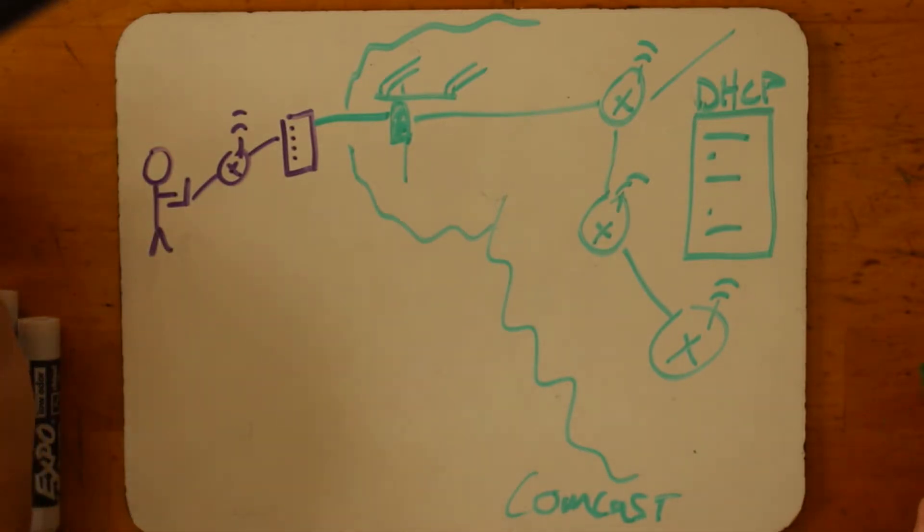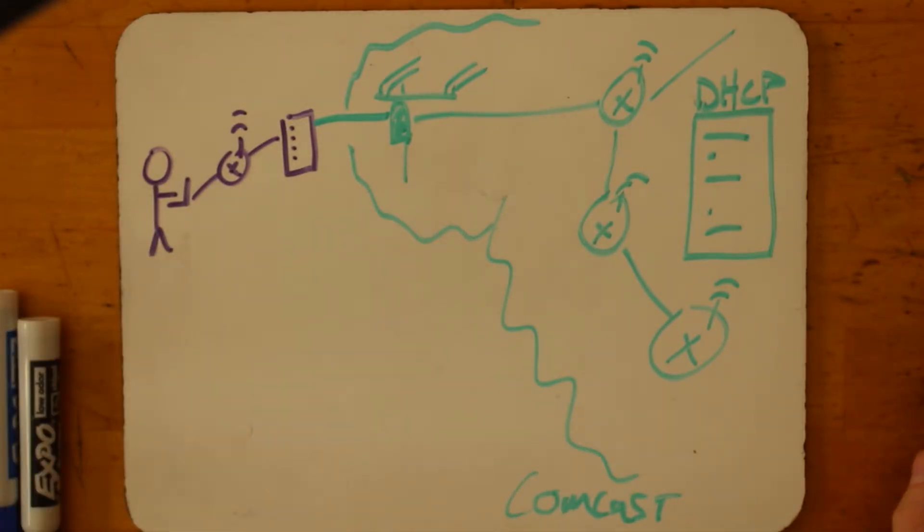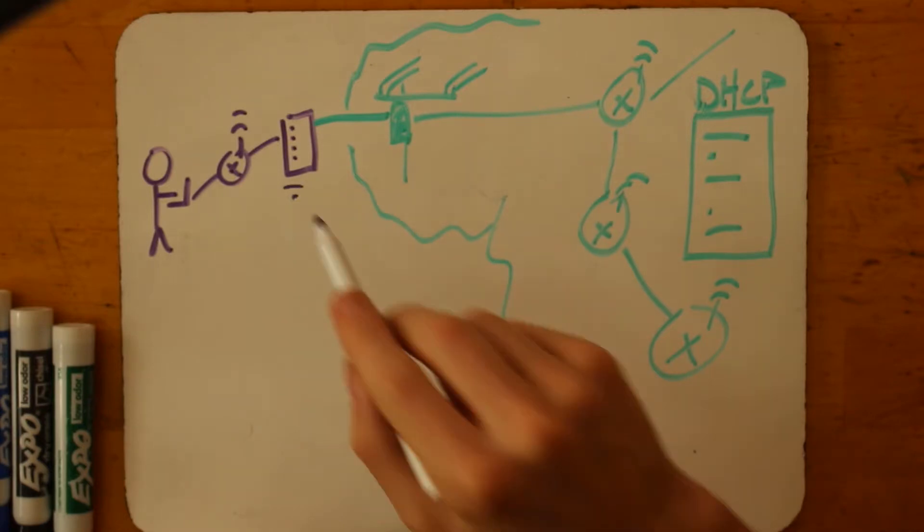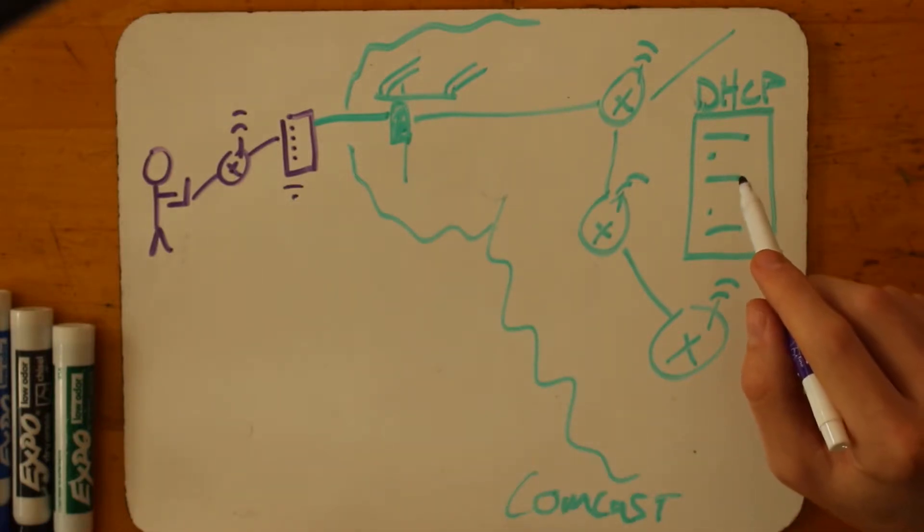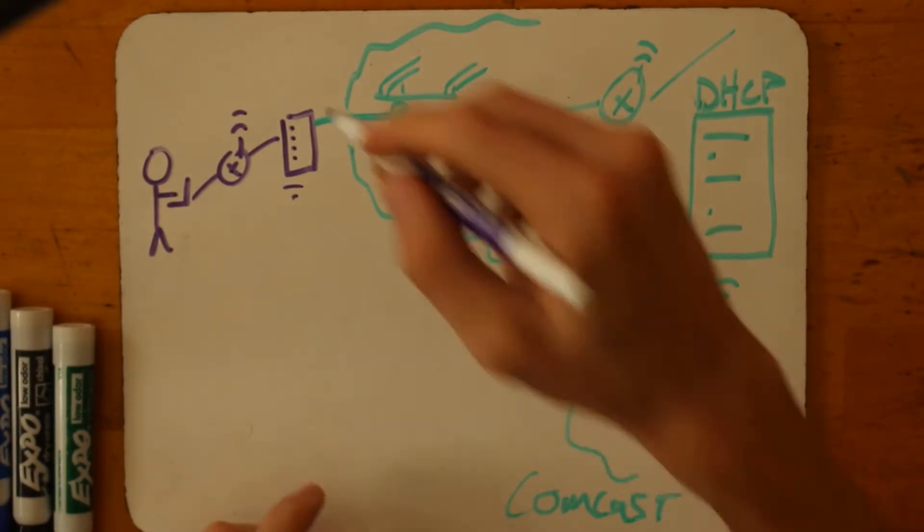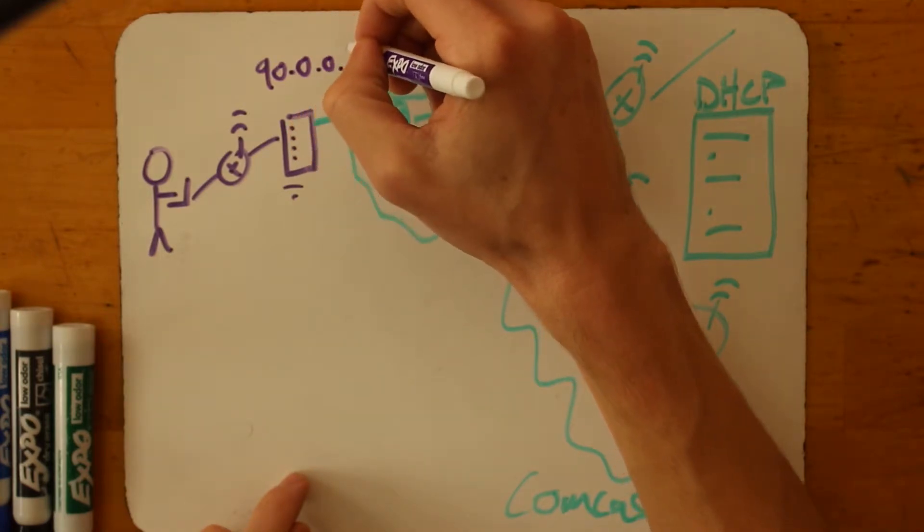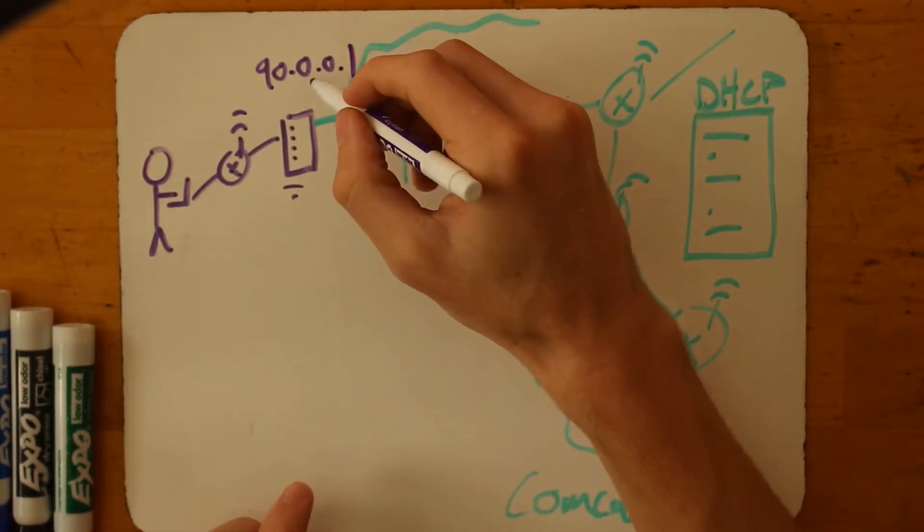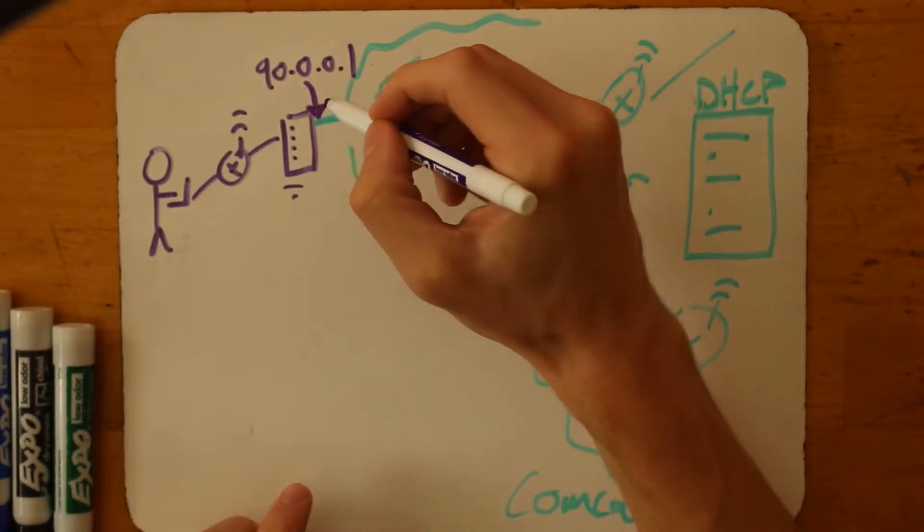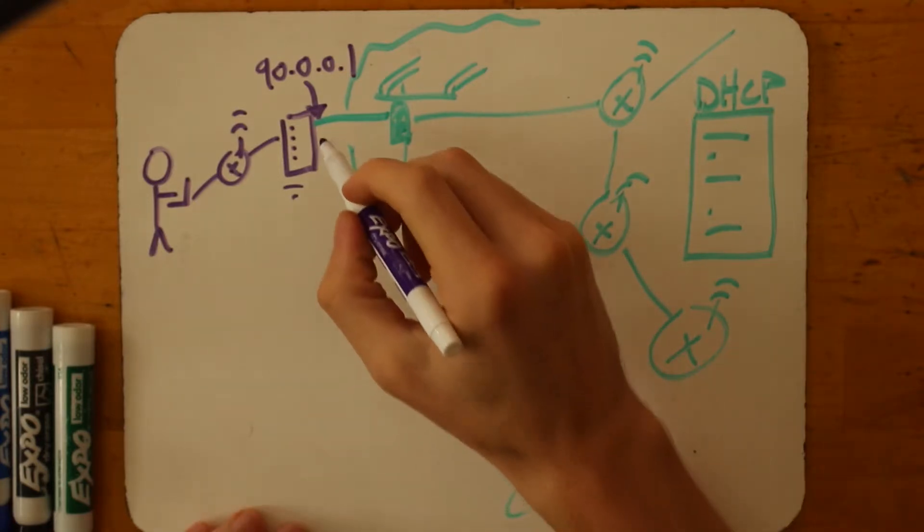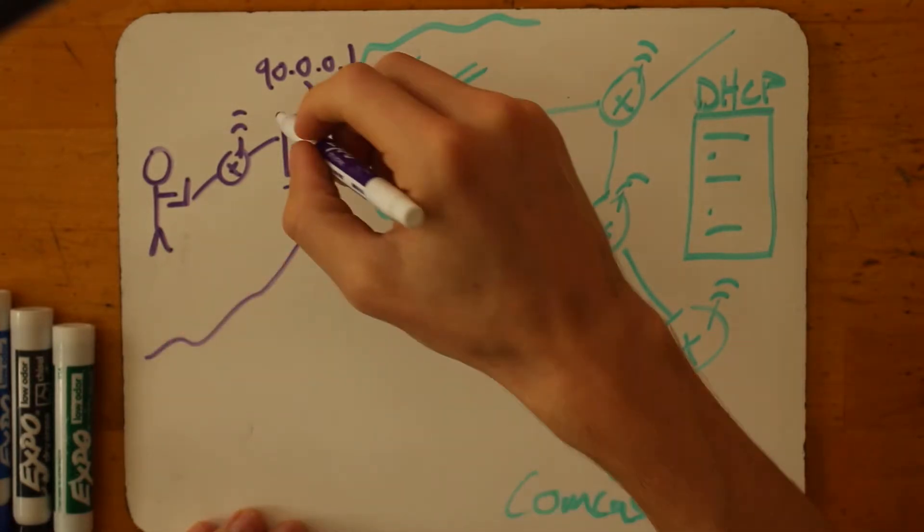And the person on the other line of the phone was like, sure, your modem is going to do some blinking lights now and things will change. And one of the most important things that happened then during that process is that your modem here communicated with this Comcast DHCP server to deliver you an IP address. So let's say that IP address just for ease of reading was 90.0.0.1. And that IP address is now associated with your local network.